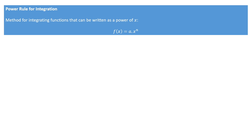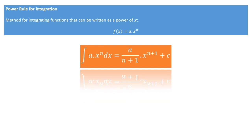Now, the formula for the power rule — and this is a formula that you'll want to make sure you know — is the following: the integral of a times x to the power of n is equal to a over n plus 1, times x to the power of n plus 1, plus some constant c.